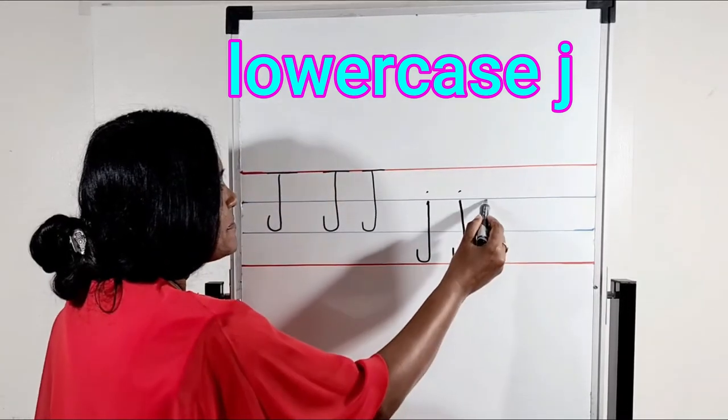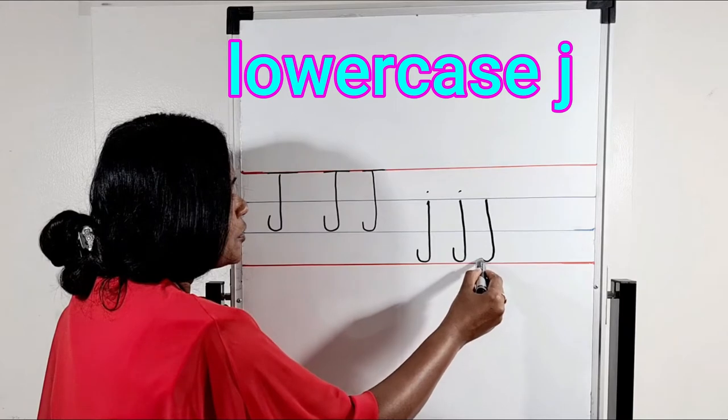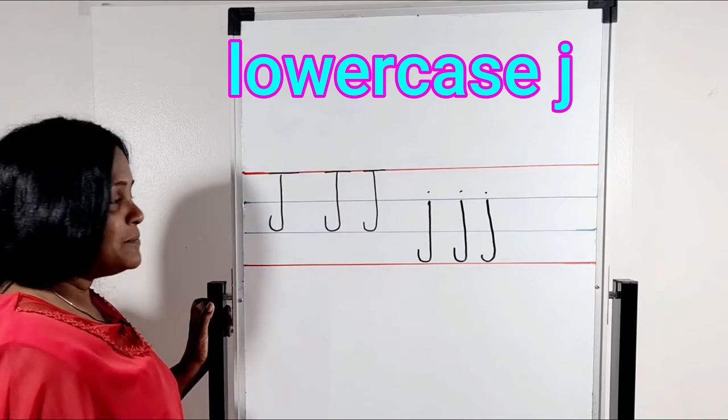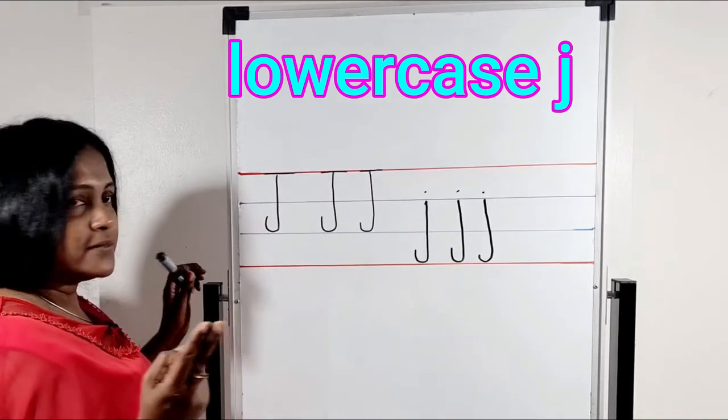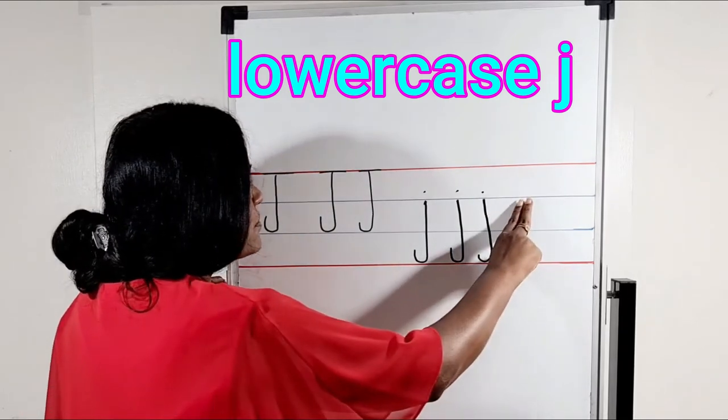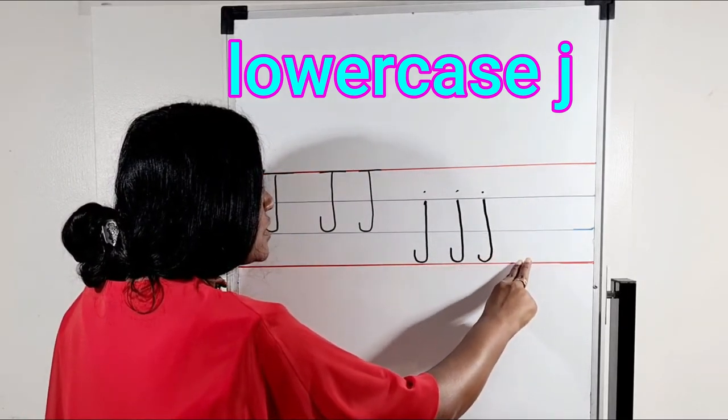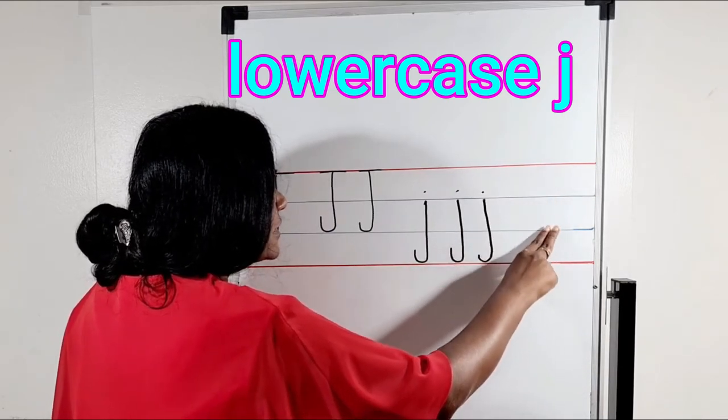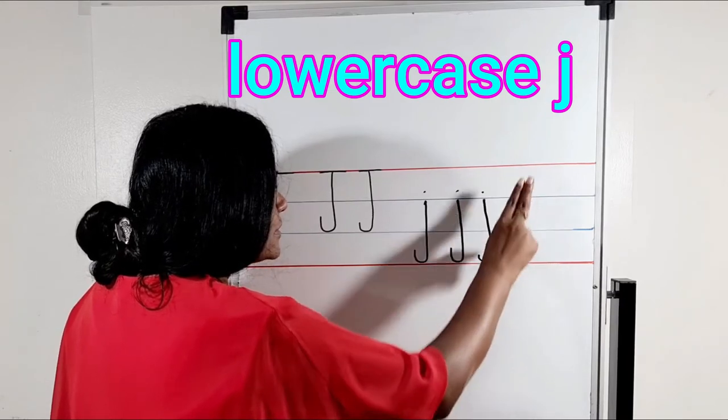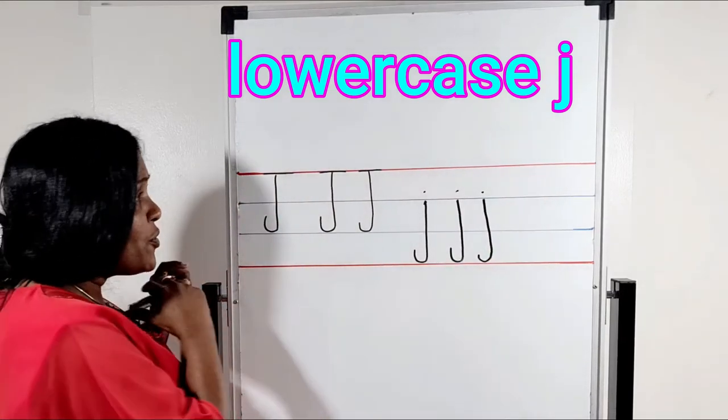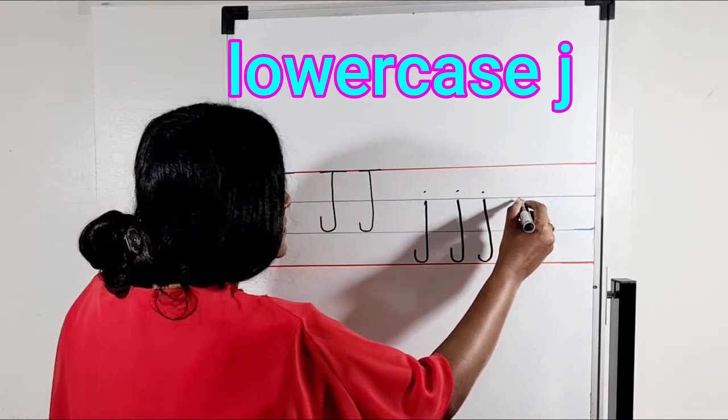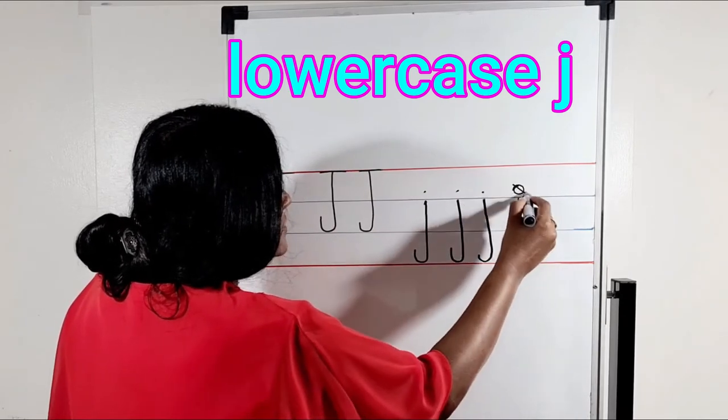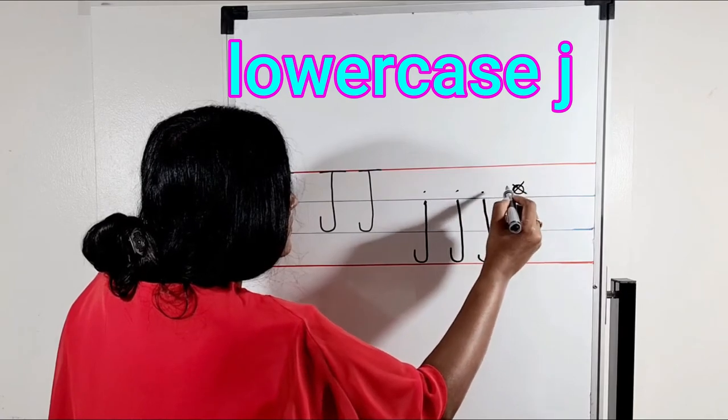One more time. A hook. And a dot. Are you ready to practice with me? Take these two fingers. We will start from the first tummy line. And it goes to the leg line. A hook. And a dot. Another hook. And keep a dot. Don't keep the dot like this. Dot means just like this.